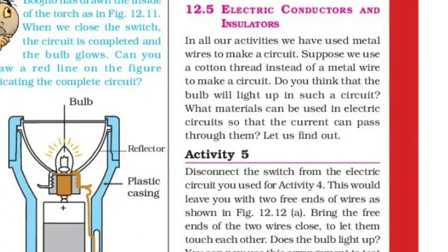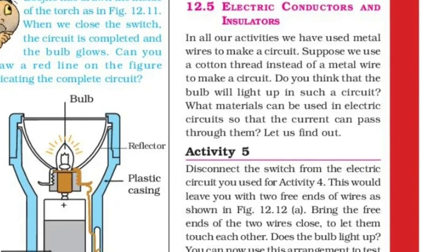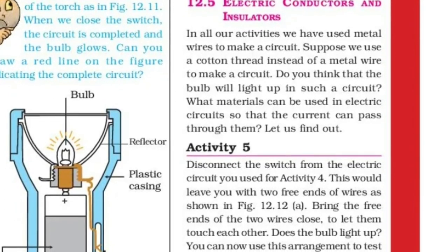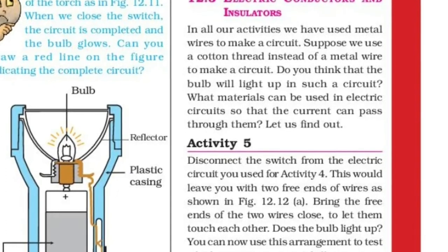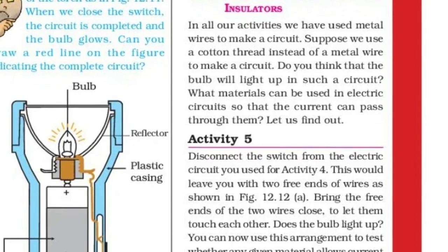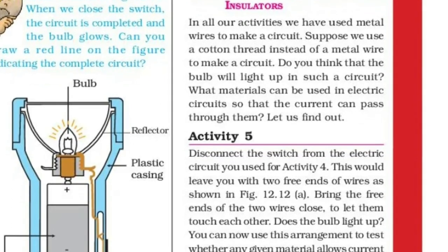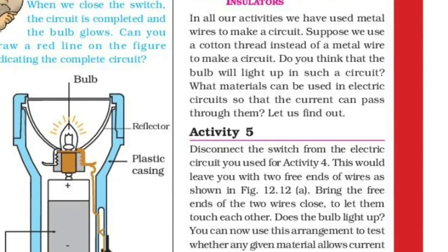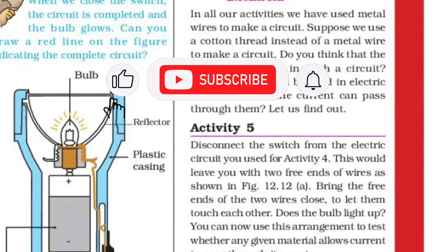In this chapter we look at electric conductors and insulators. In all our activities we have used metal wires to make a circuit. Suppose we use a cotton thread instead of a metal wire — do you think the bulb will light up? What materials can be used in electric circuits so that current can pass through them?